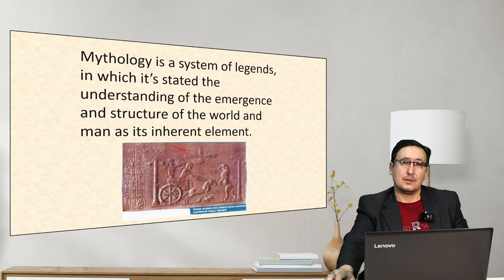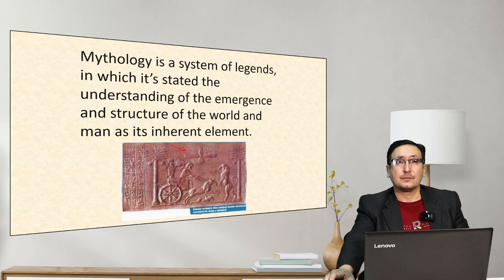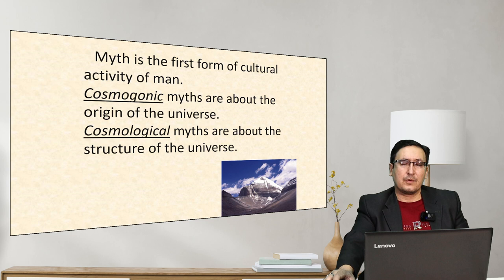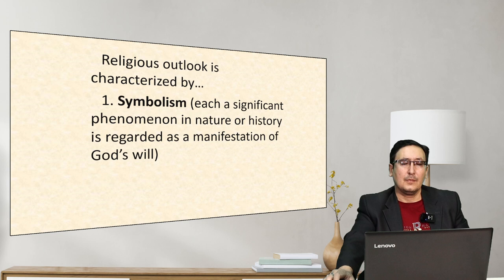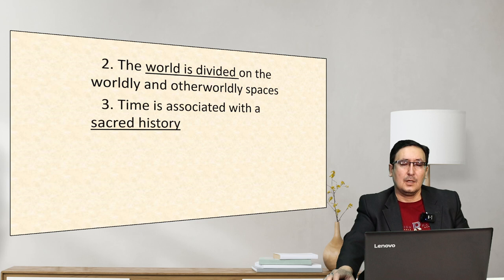There are three historical types of outlook: mythology, religion, and philosophy. Mythology is a system of legends stating the understanding of the emergence and structure of the world. In mythology there are many gods; in religion there is one god — that is the official difference. Myth is the first form of cultural activity of man. Religion is a faith in the supernatural, based on a strong system of moral norms. Religious outlook is characterized by symbolism — phenomena in nature regarded as a manifestation of God's will.